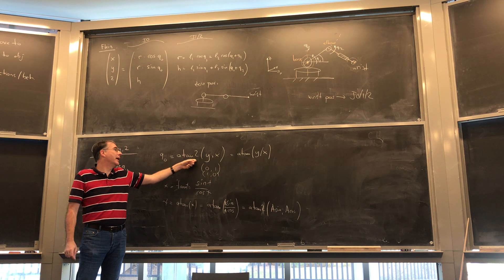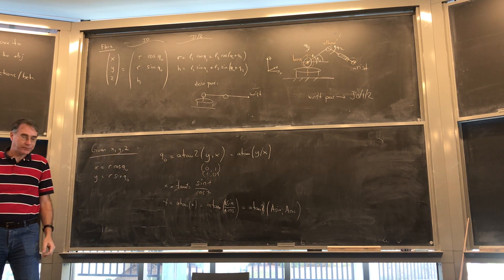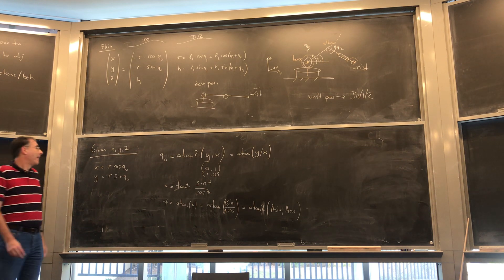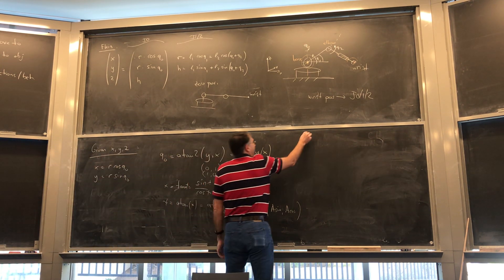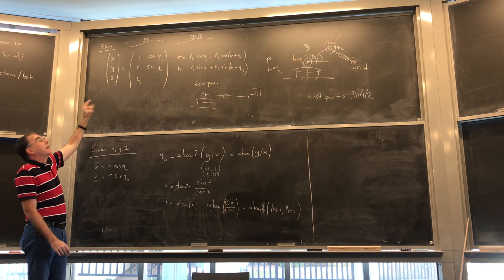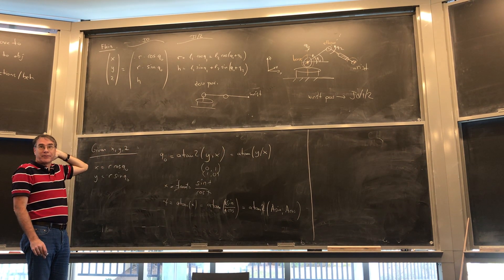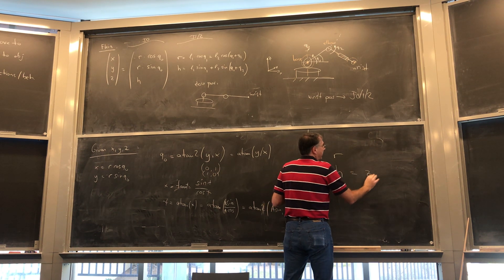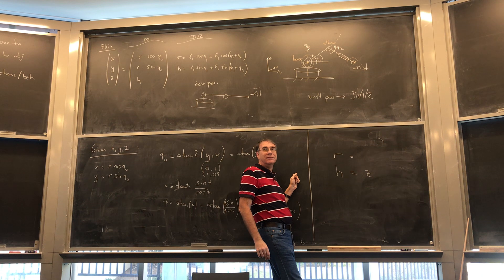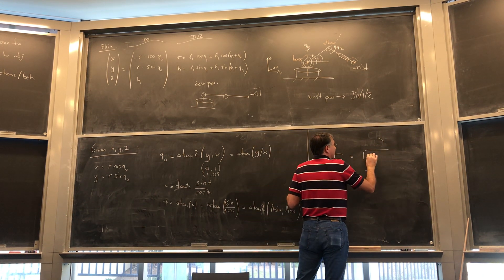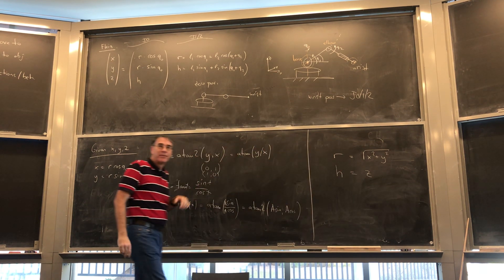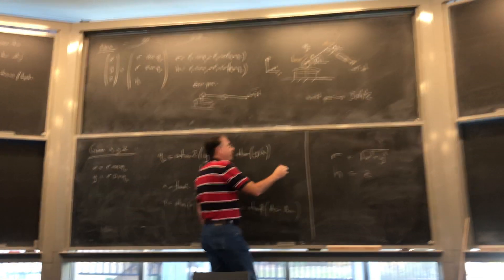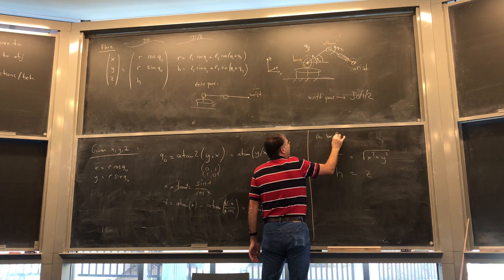So in all of this, you will usually see an atan2. You will very, very rarely ever see a plain atan. So that means I've already solved step 1 — I've solved J0. Then H is just going to be Z. How do I get R? By the way, I'm going to come back and fix this.